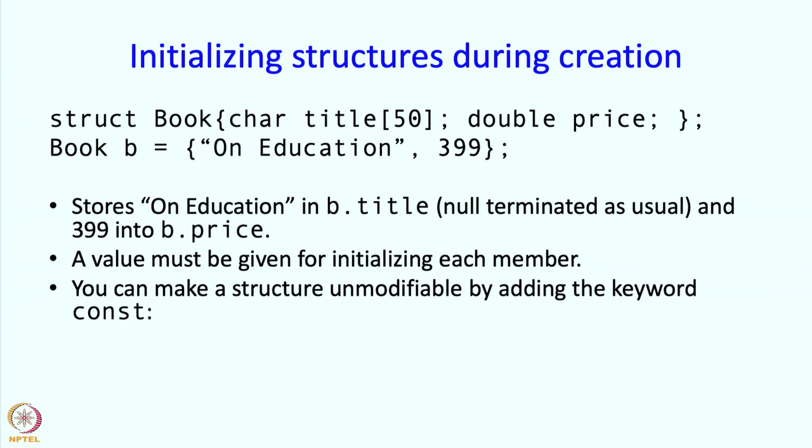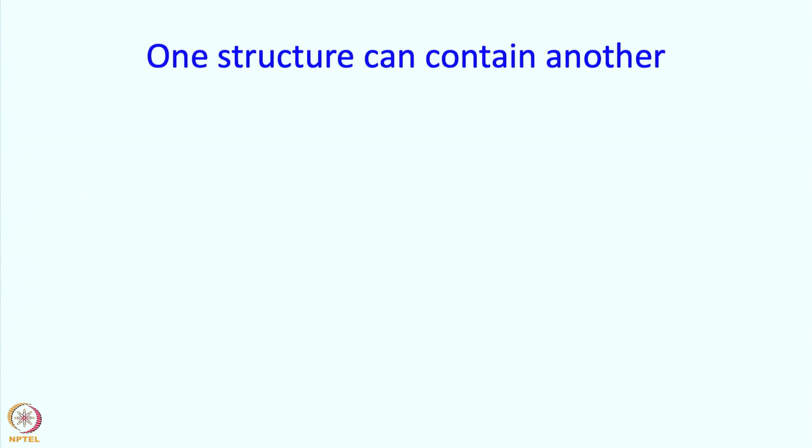You can make structures unmodifiable by adding the keyword const. For example, you may define a structure variable c with title member being the outsider and the price being 250, but here you are saying that c cannot be modified. Either of the two members of c cannot be changed as your program executes.